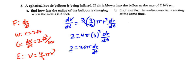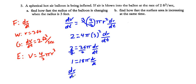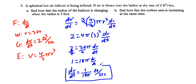Dividing both sides by 36π: 1 = 18π · dr/dt, so dr/dt = 1/(18π) feet per second.